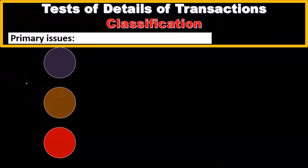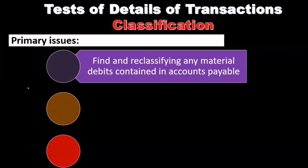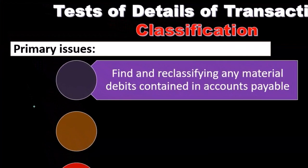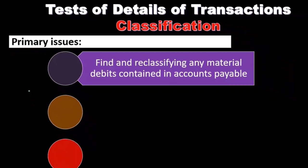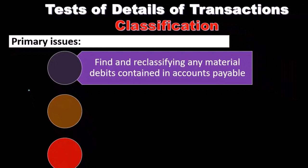For the assertion of classification, the primary issue is to find and reclassify any material debits contained in accounts payable. If there are debit balances within the accounts payable detail, that is unusual and those debit balances should be removed and investigated.